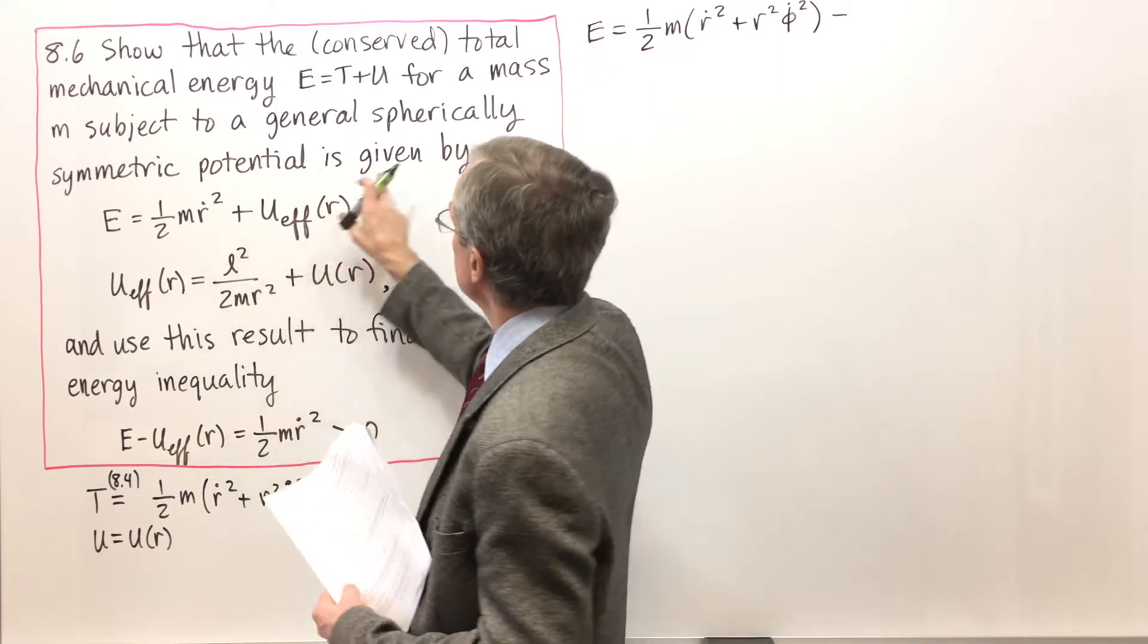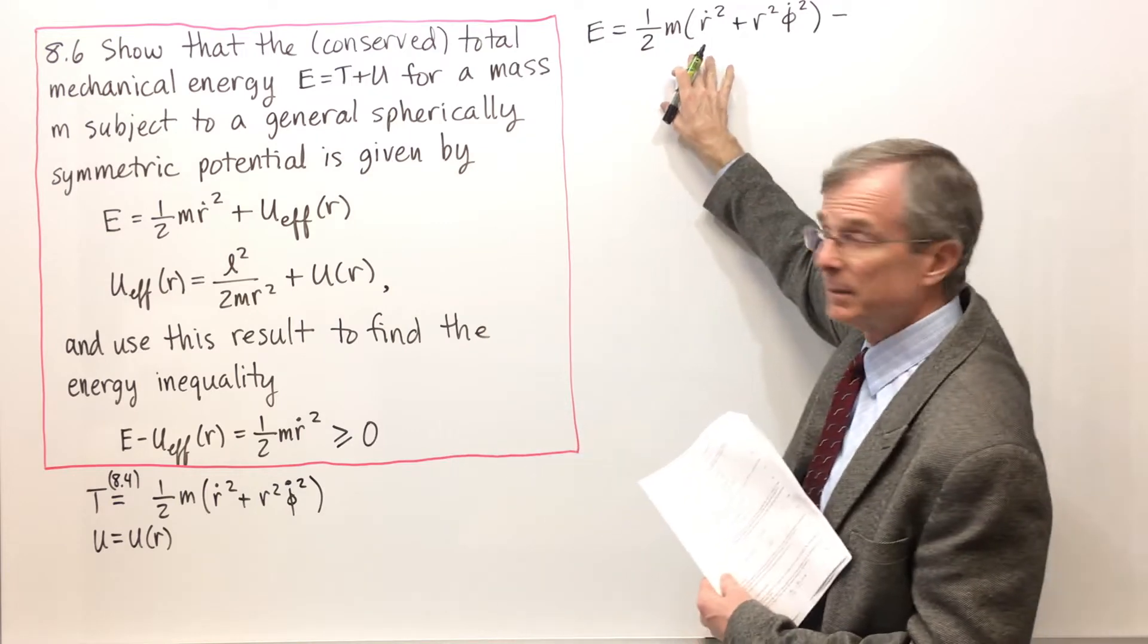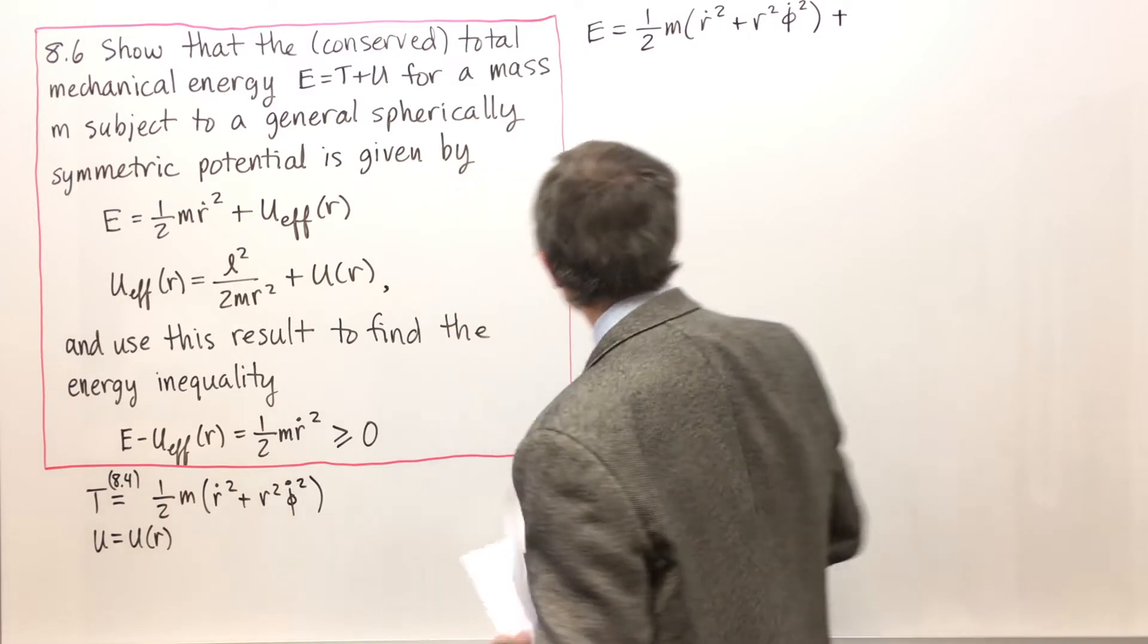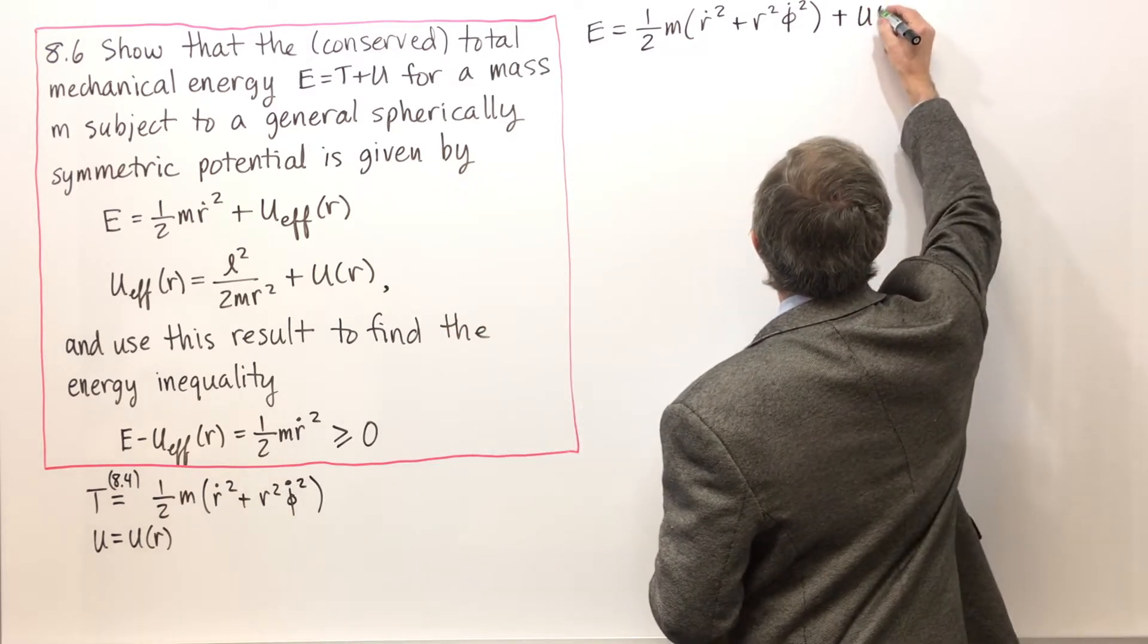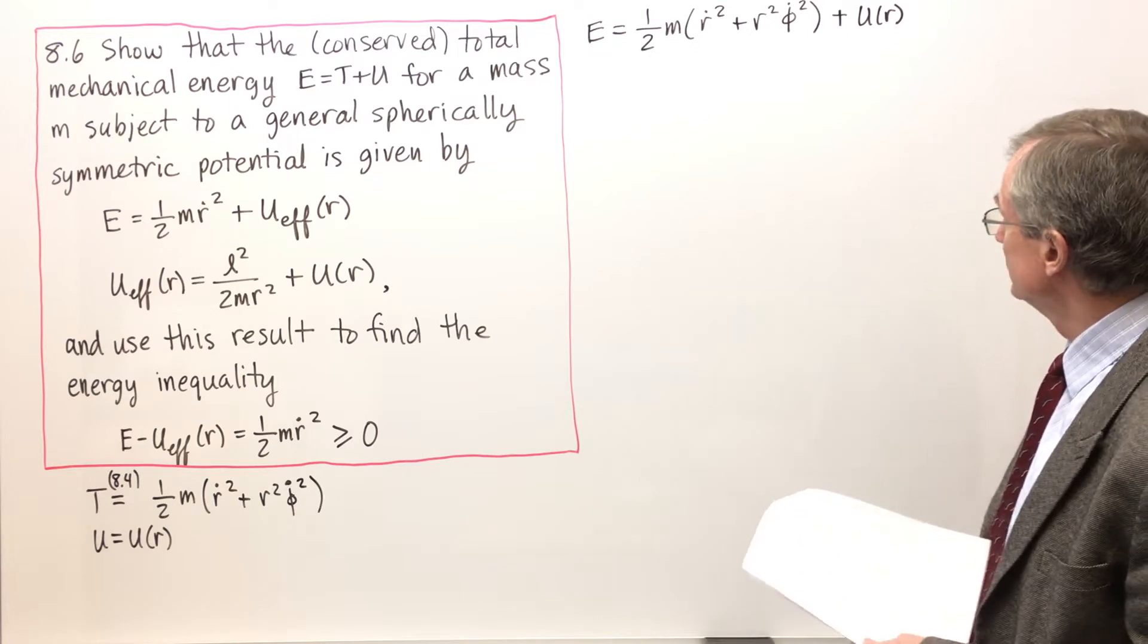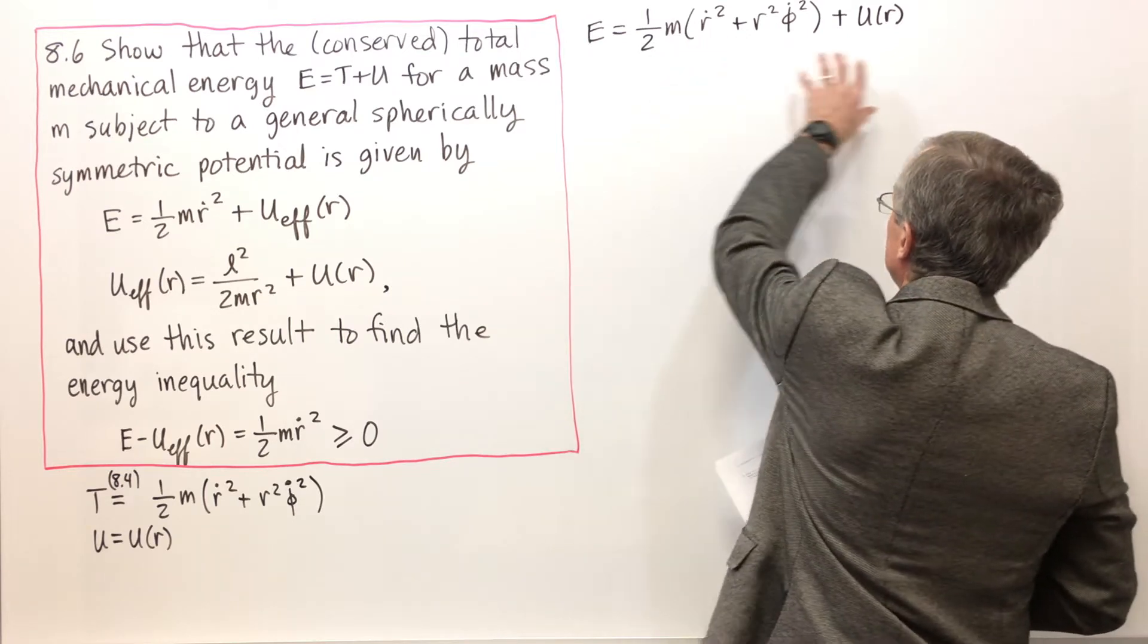Okay, so the total energy, E equals T plus U. I've got T here. And now we're going to add U to that. And that's just this U of R. So that is the total mechanical energy, kinetic plus potential.